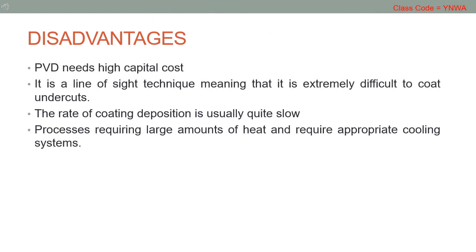Disadvantages of the physical vapor deposition process: PVD requires high capital cost to operate. Some processes operate at high vacuums and temperatures requiring skilled operators. It is a line-of-sight technique, meaning it is extremely difficult to coat the undercut side of a material surface. The rate of coating deposition is usually quite slow, resulting in less mass production. PVD processes require large amounts of heat and require appropriate efficient cooling systems to control the temperature.